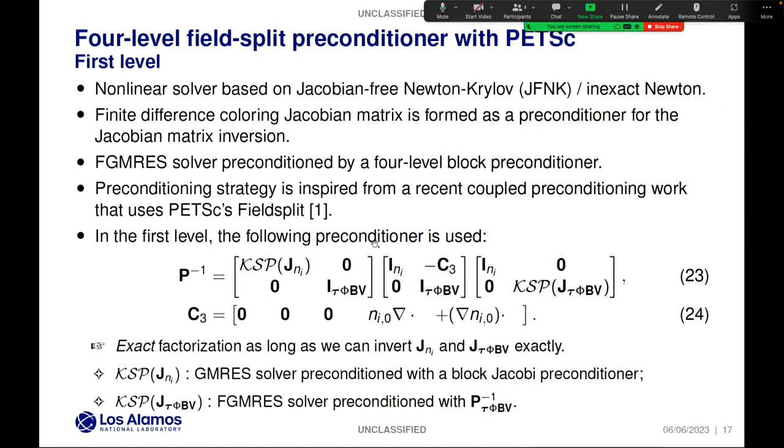At the most outer level, we use a nonlinear solver based on Jacobian-free Newton-Krylov and inexact Newton. For the inner linear systems, we need to compute a finite difference approximation of the Jacobian with coloring that serves as a preconditioner for the Jacobian matrix inversion. Relying on this approximated Jacobian turns out to be necessary because the mimetic formulations involve many projections between different discrete spaces, and implementing an analytical Jacobian for such a complicated system is cumbersome.